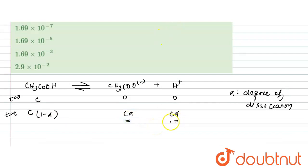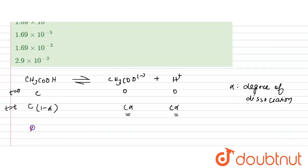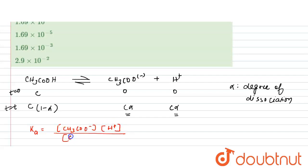Now we can write down the dissociation constant expression. Ka equals the concentration of products over reactant: [CH₃COO⁻][H⁺] divided by [CH₃COOH], which gives us Cα × Cα divided by C(1 − α).